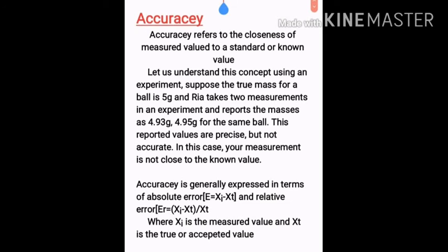Rhea takes two measurements of the same ball and reports masses of 4.93 g and 4.95 g. These two values are close to each other, so they are precise. However, since the true mass is 5 g and the measured values differ from it, the measurements are precise but not accurate.